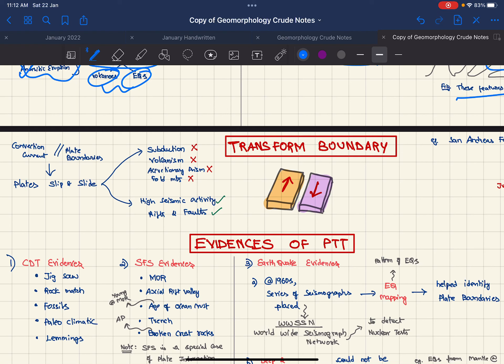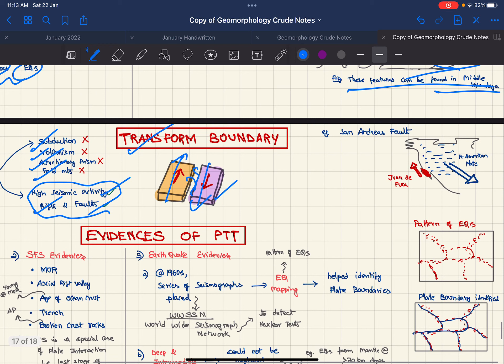We have seen divergent and convergent boundaries. All that is left is transform boundary. In this boundary, convection columns are parallel to plate boundaries, so plates slip past each other. There won't be any subduction, volcanism, accretionism, or fold mountains, but there will be seismic activity and rift zones forming due to friction between the two plates. An example is the San Andreas Fault formed by the Juan de Fuca plate and North American plate sliding past each other.